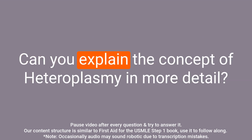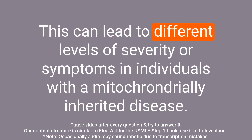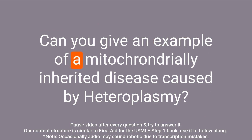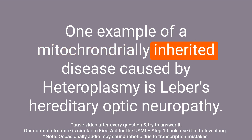Question: Can you explain the concept of heteroplasmy in more detail? Answer: Heteroplasmy refers to the presence of both normal and mutated mtDNA in cells, resulting in variable expression of disease. This can lead to different levels of severity or symptoms in individuals with a mitochondrially inherited disease. One example is Leber's hereditary optic neuropathy.